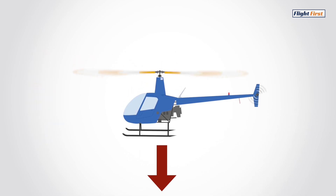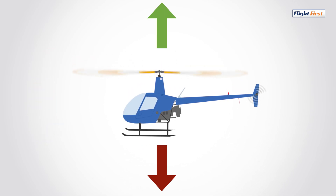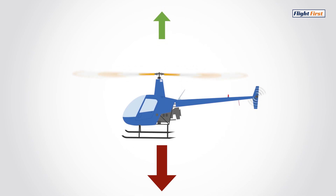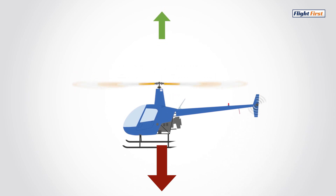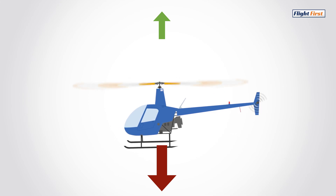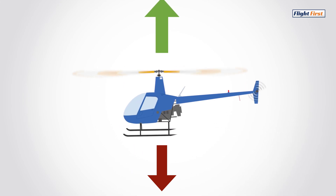All we need to do as pilots is to increase the strength of the lift vector by raising the collective. If there is more weight than lift, the helicopter will start to sink. To increase our altitude, we need to be producing more lift than the helicopter weighs.